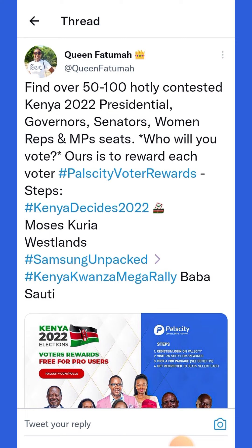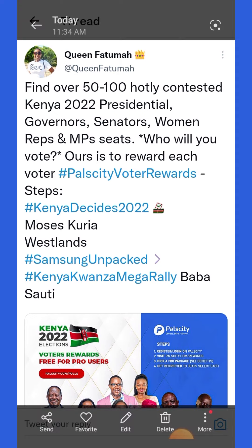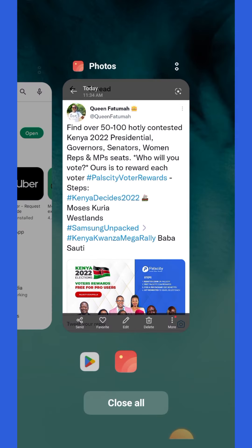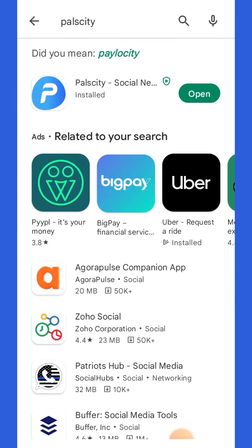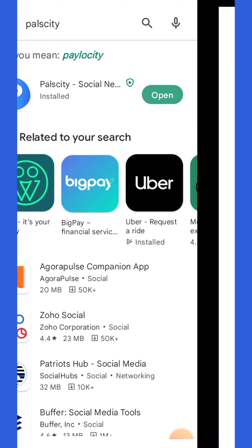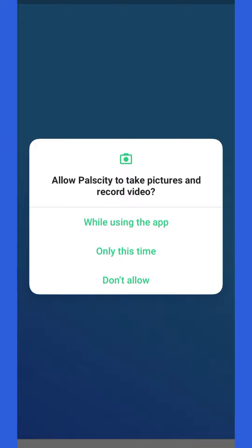Let's see how good you are at selecting the people who will eventually end up being the winner. To do all this, we've created it on the Palsity platform. To get started, just go to your Play Store and get the Palsity app. Just look for Palsity, you'll find the app, just download it. Palsity is a social media platform.